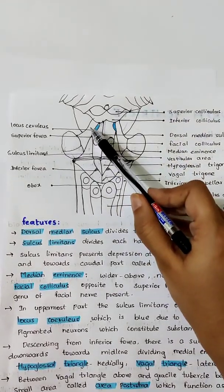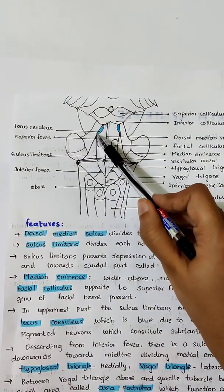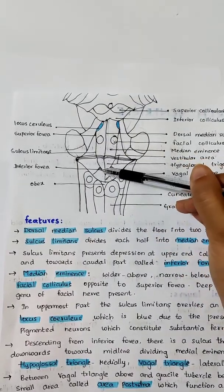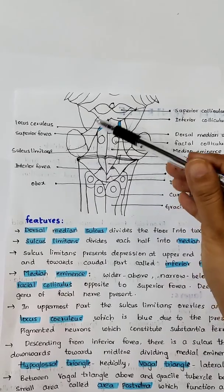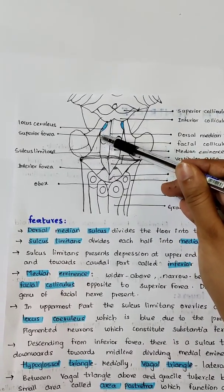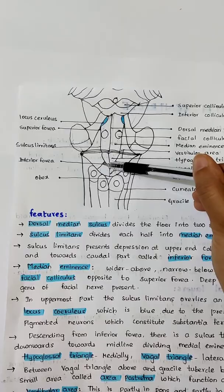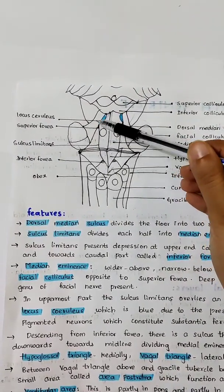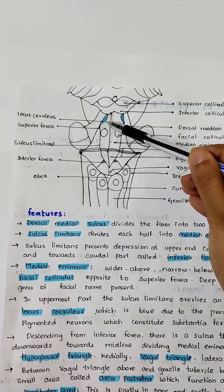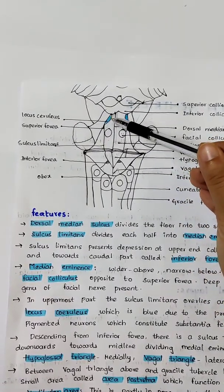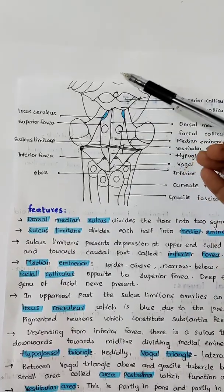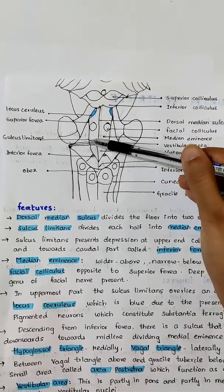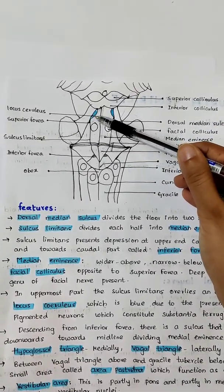The sulcus limitans presents a depression at its upper end known as the superior fovea, and a depression at its lower end known as the inferior fovea. In the upper part of the sulcus limitans lies the locus ceruleus, which is blue in color due to the presence of pigmented neurons that constitute the substantia ferruginosa.